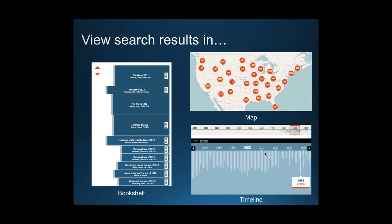The DPLA also offers other ways to look at search results. The bookshelf view lets students look at book and periodical results. The map allows students working on a local history project to see all items about a particular location. The timeline lets you view search results according to date information — useful for historians and humanists always interested in change over time.